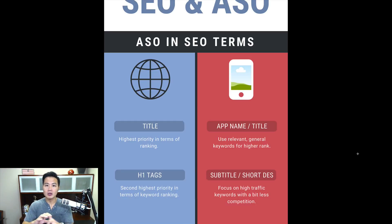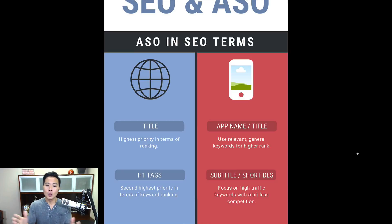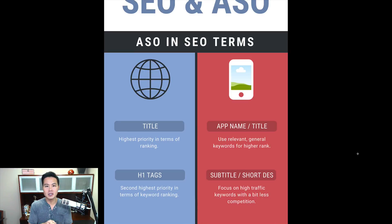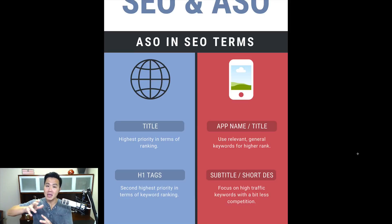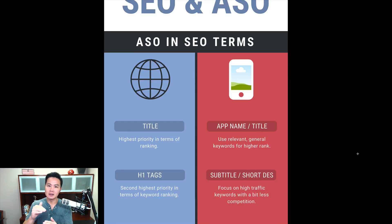On iOS you have 30 characters for the subtitle, whereas on Google Play you have 80 characters for the short description. I focus on high-traffic keywords with a little less competition in these fields because the ranking weight isn't as high as the app name. I'll repeat keywords from the app name — definitely on Google Play, maybe on iOS — but I also target lower-traffic keywords that still have decent search volume so I can rank for them reliably.